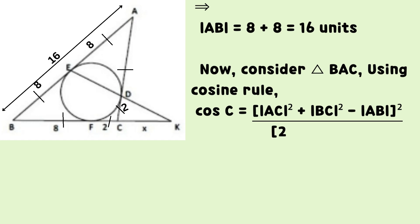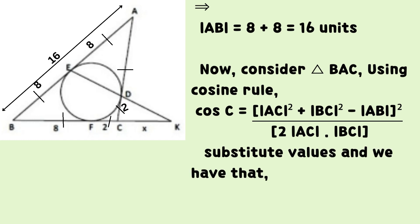Cosine C equals the sum of the square of AC and the square of BC minus the square of AB all divided by the product of 2 line AC and line BC.